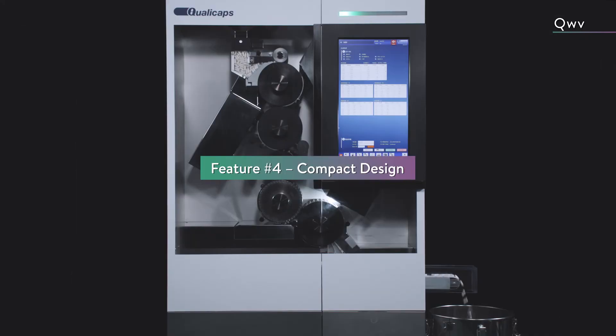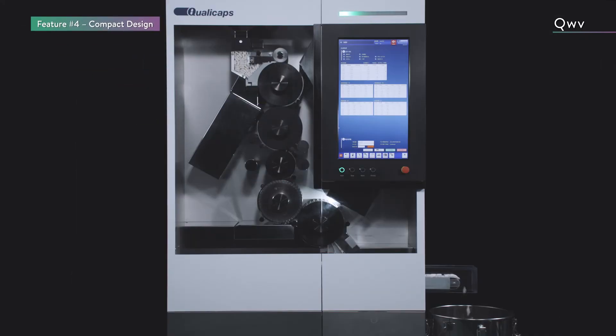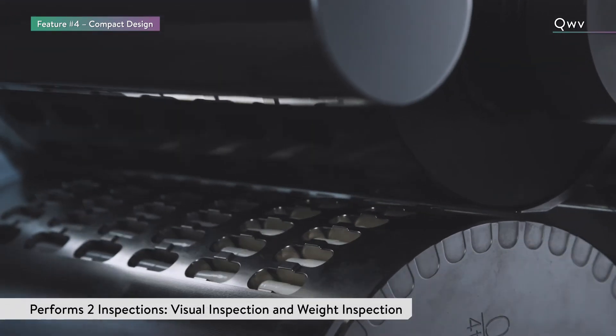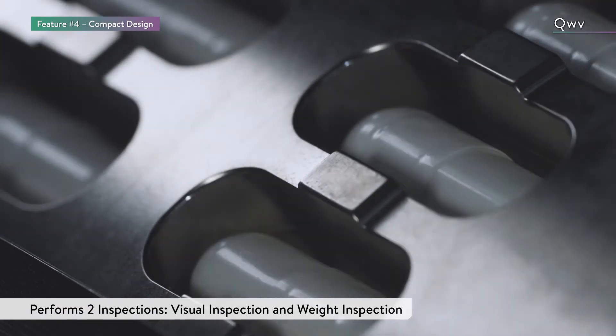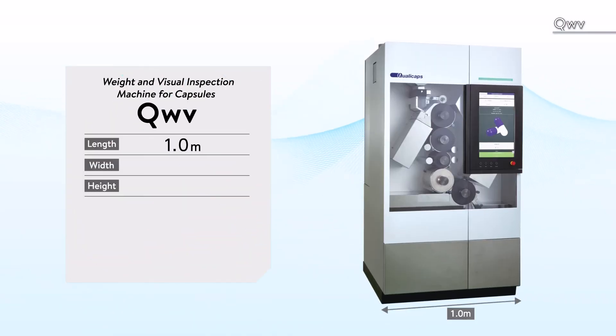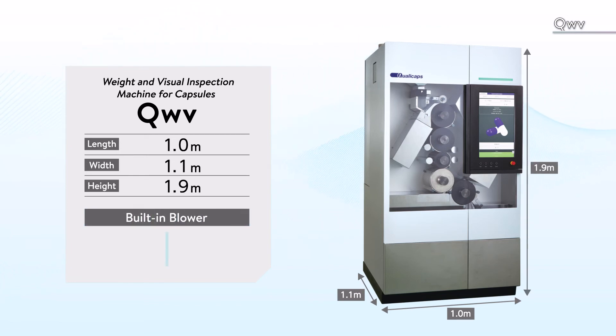The CUVE's greatest feature is its ability to perform two inspections, visual inspection and weight inspection, in a single compact unit. With a length of 1 meter, a width of 1.1 meters, and height of 1.9 meters, the CUVE integrates visual and weight inspection into a single compact unit.